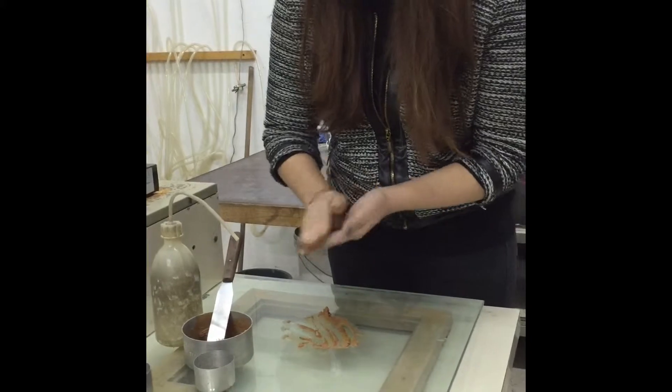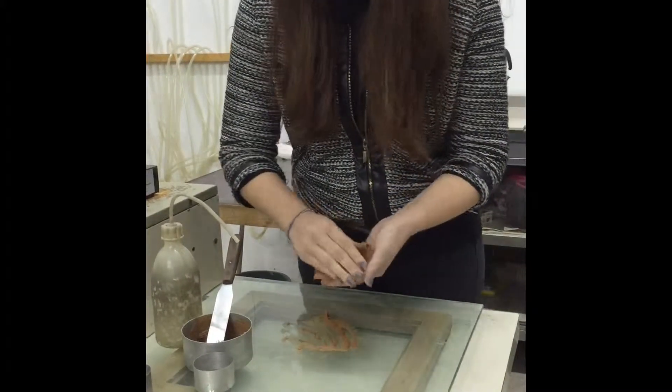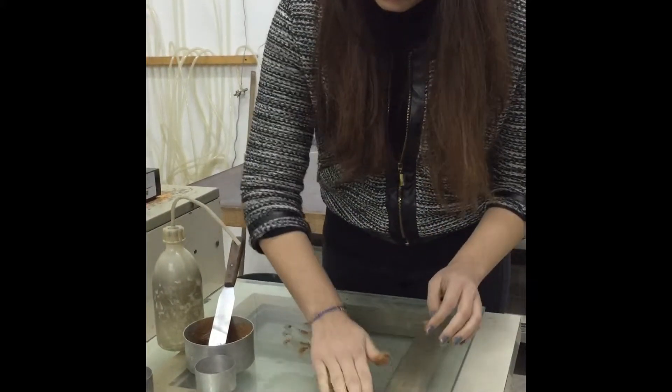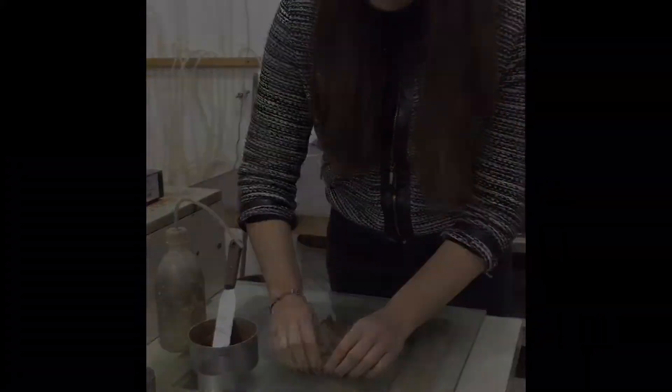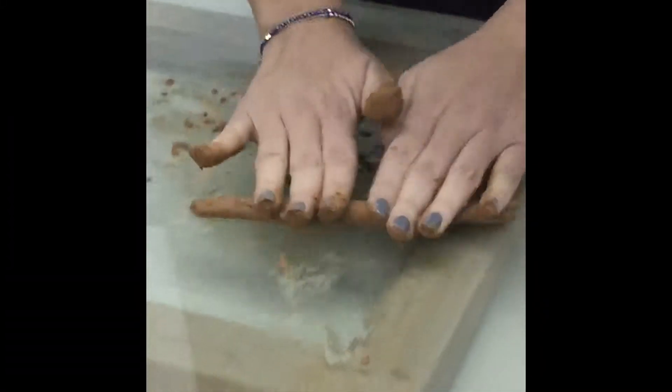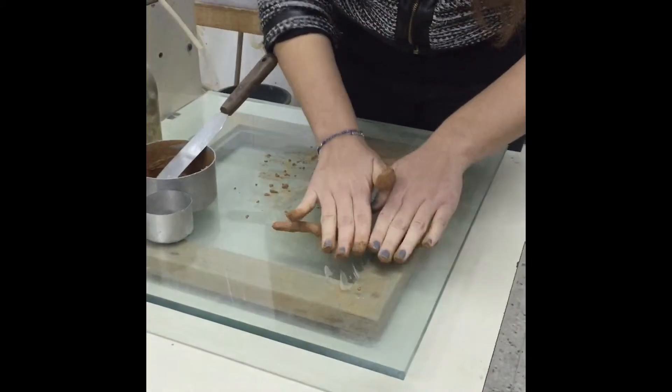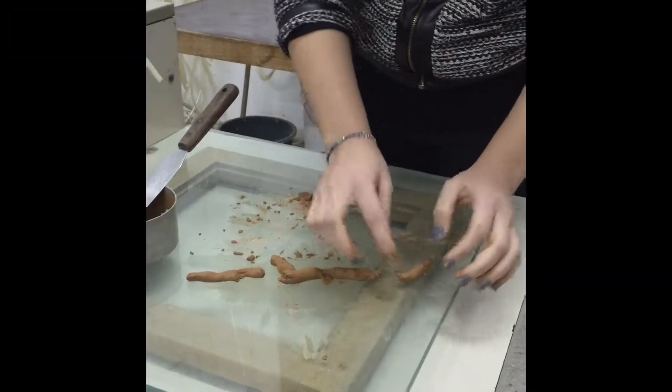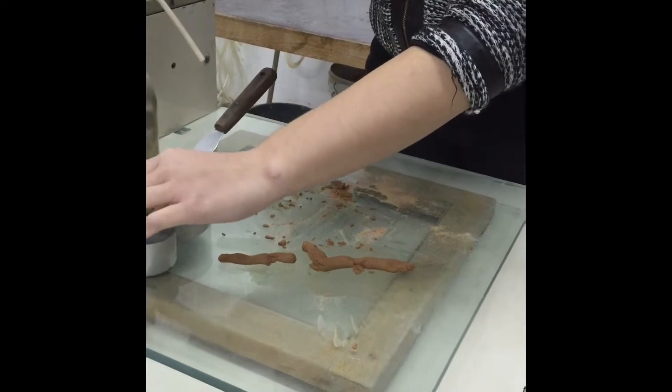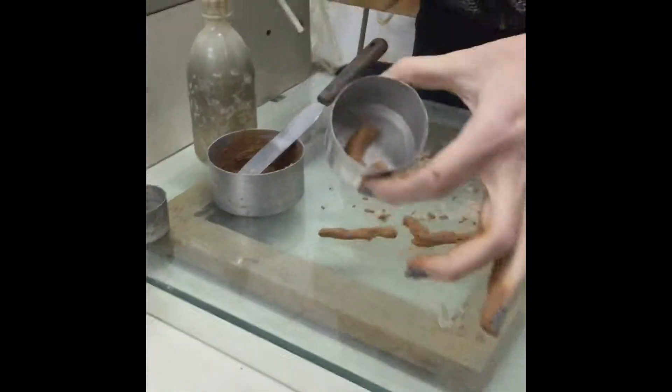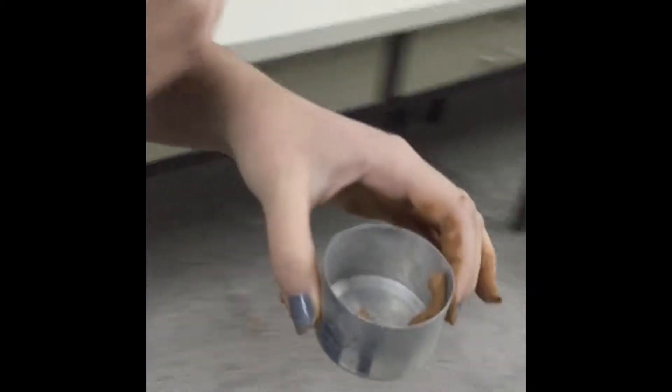Now we are rolling it to make it have a diameter just about 3 mm. You have to roll it constantly and after it reaches a diameter of 3 mm we go to measure its weight.